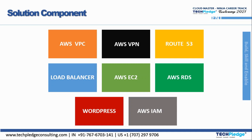The solution components include Route 53, Load Balancer — which is actually important for high availability — AWS EC2, AWS RDS, WordPress, and AWS IAM. IAM stands for Identity Access Management, which gives identity-based access with different roles and features. We provide different roles through AWS IAM. The WordPress site is the proposed solution, built with the help of EC2 and RDS.